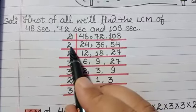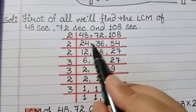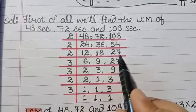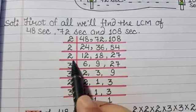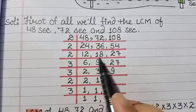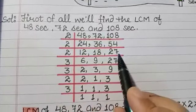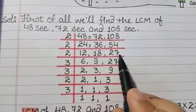So 24 divided by 2 is 12, 36 divided by 2 is 18, 54 divided by 2 is 27. Again, we will divide the number with 2 because two numbers are divisible by 2. The third number is an odd number, we will leave this number.